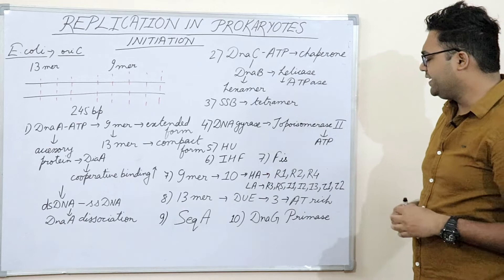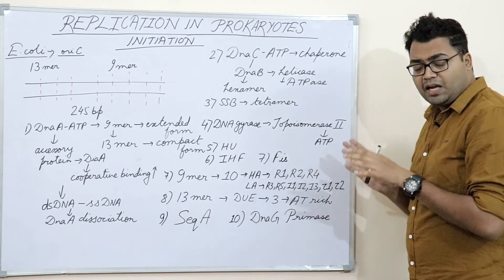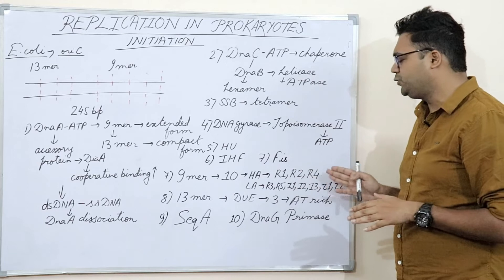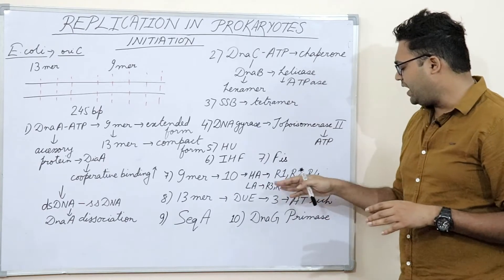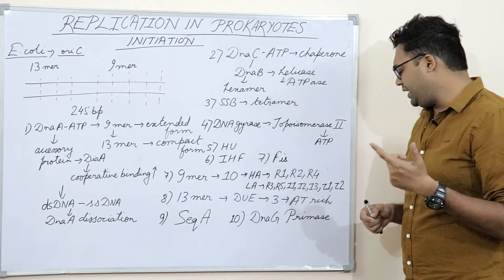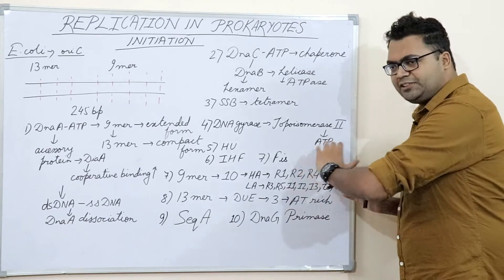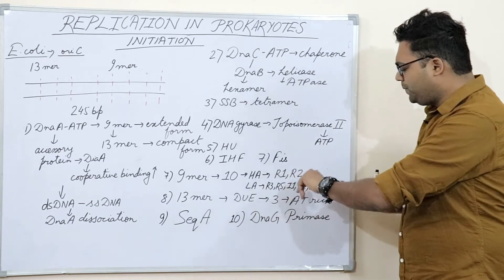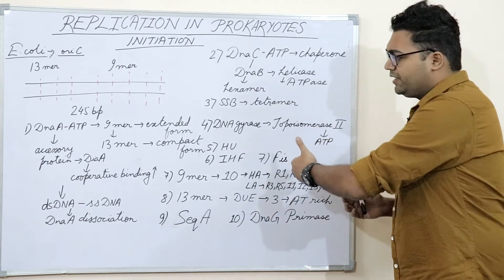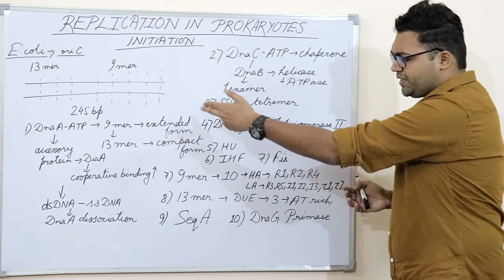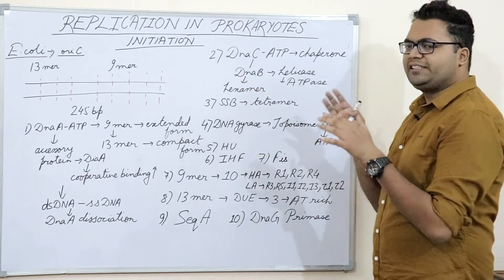The high affinity sites include three specific sites: R1, R2, and R4. The low affinity sites are R3, R5, I1, I2, I3, tau1, and tau2. We can distinguish these into the R group, the I group, and the tau group. These sequences are extremely important for specific accessory or initiator proteins to recognize the 245 bp origin of replication.